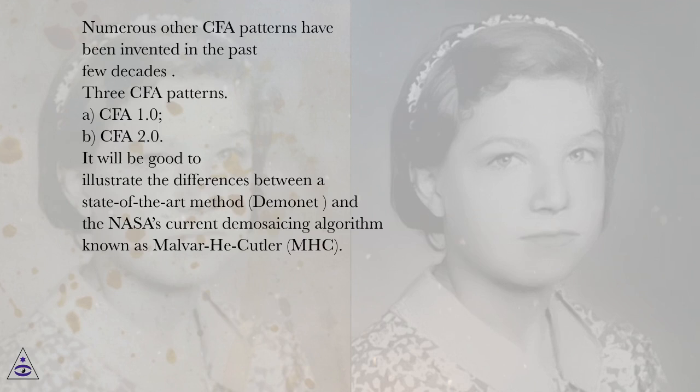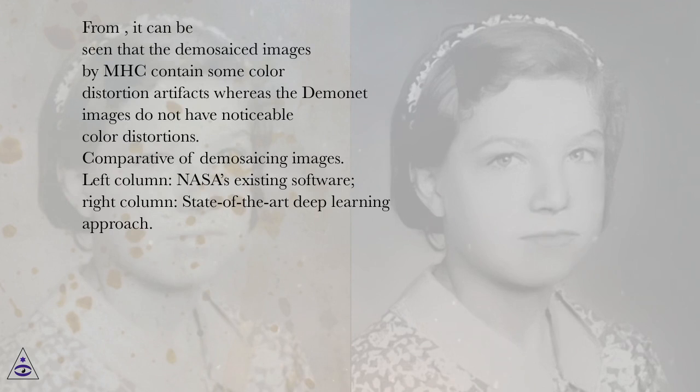It is good to illustrate the differences between a state-of-the-art method, DEMONET, and NASA's current demosaicing algorithm known as MHE. The demosaiced images by MHE contain some color distortion artifacts, whereas the DEMONET images do not have noticeable color distortions. The left column shows NASA's existing software and the right column shows the state-of-the-art deep learning approach.